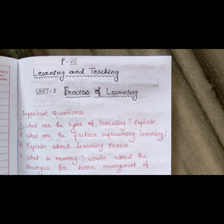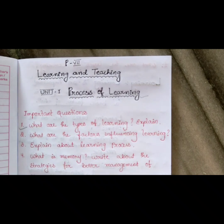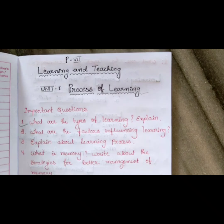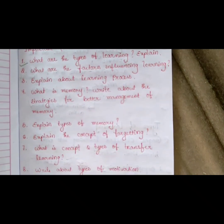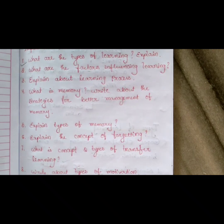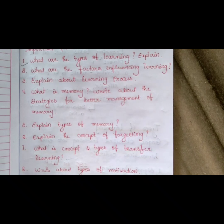First of all, we'll see the important questions from this unit. There are a total of nine important questions in this unit, because the process of learning is a big unit. I will read the questions. The first one: what are the types of learning? Second question: what are the factors influencing learning?